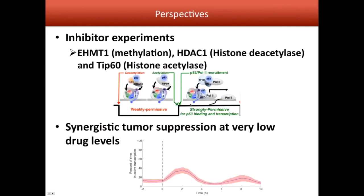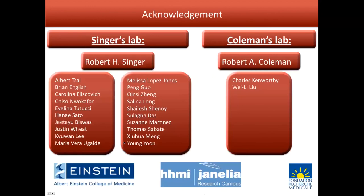To conclude, the two main next steps are: first, to continue the acetylation and deacetylation experiments, specifically targeting TIP60 with drugs to see if I can change the burst duration selectively; and second, to use these tools to detect synergistic tumor suppressor effects at very low drug levels, potentially finding ways to decrease drug toxicity while maintaining the same effect on p21 expression. I want to thank everyone from both the Rosbash and Rob Coleman labs who helped me on this project — I could never have done it without them. I'm happy to take your questions.